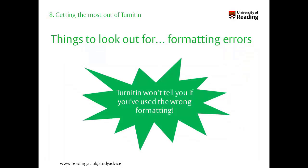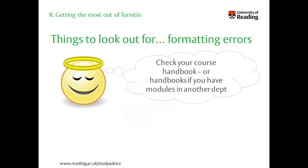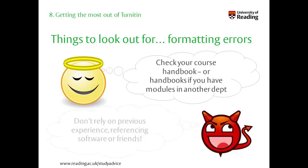Have you formatted your references correctly? One thing Turnitin won't tell you is if you've used the right format, so you'll still need to check for yourself. It's always best to check your course or programme handbook for examples and instructions on the style and format of referencing preferred by your department. If you're studying modules in more than one department, you'll need to check the instructions given by both as they could be quite different. Don't rely on previous experience, referencing software, or what a friend does. Referencing at school or college is usually a much simplified version of what you need to do at university. Referencing programs can't tell you what your department wants, and your friend may be studying in a different department or school where a different style of referencing is preferred.